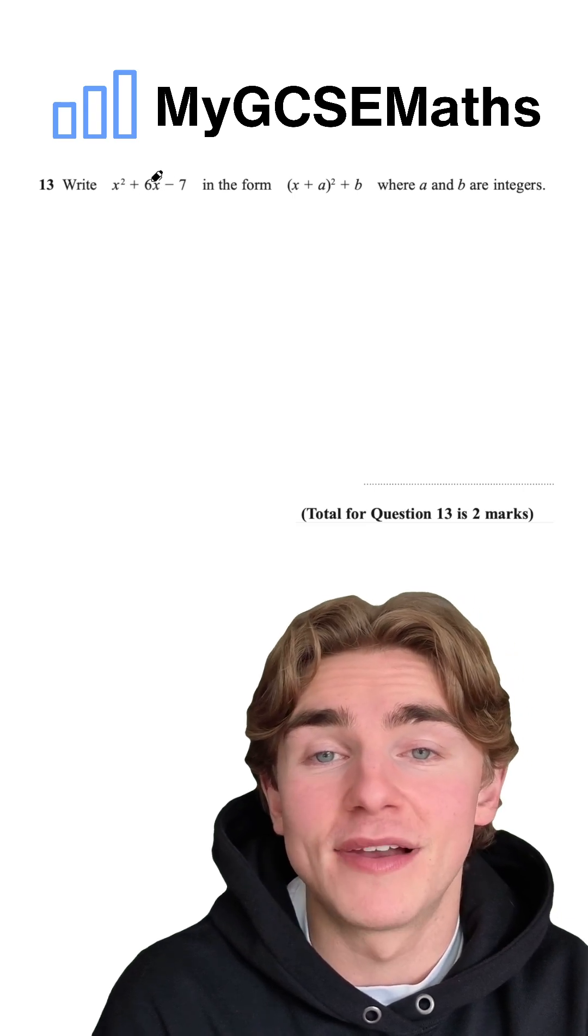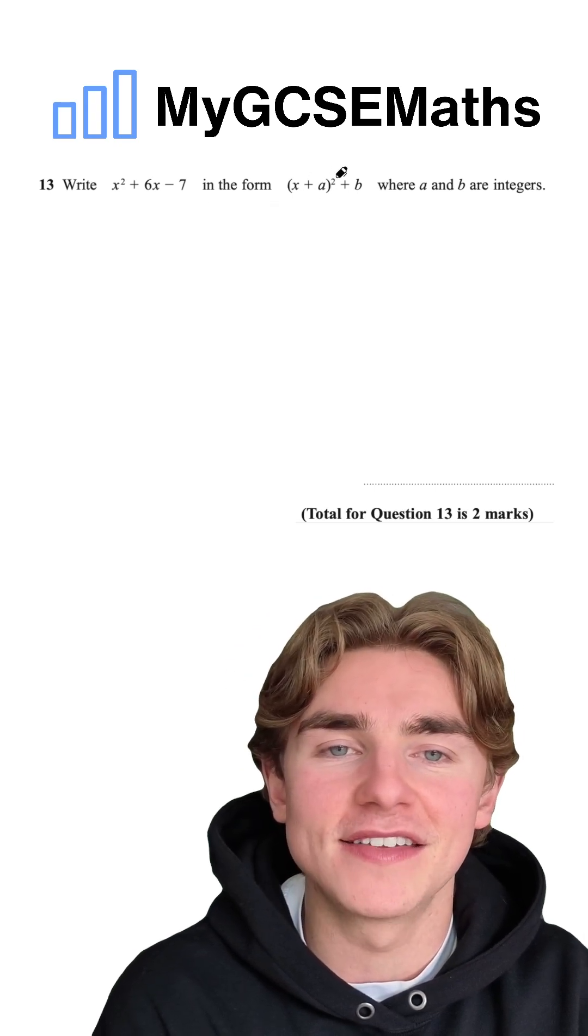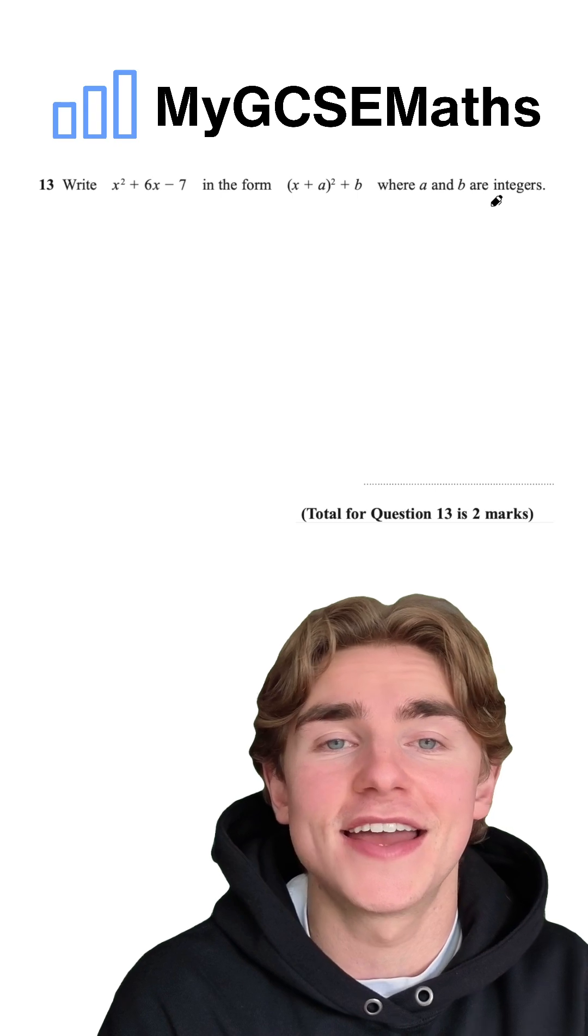It says write x squared plus 6x minus 7, which is a quadratic in the form x plus a squared plus b where a and b are integers.